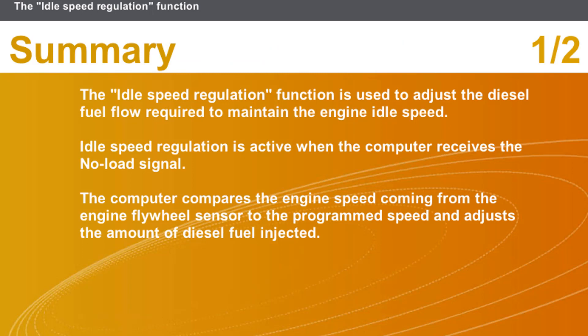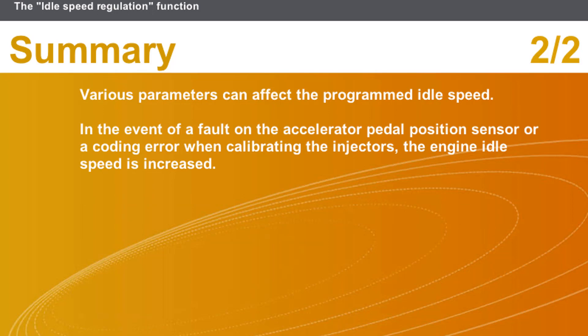In summary for idle speed regulation: the function adjusts diesel fuel flow to maintain engine idle speed; regulation is active when the computer receives the no-load signal; the computer compares engine speed from the flywheel sensor to the programmed speed and adjusts injected fuel; various parameters can affect the programmed idle speed; and in the event of a fault on the accelerator pedal position sensor or a coding error when calibrating the injectors, the engine idle speed is increased.